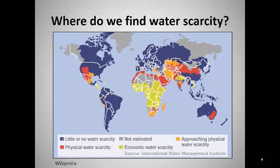Where do we find areas of significant water scarcity? They tend to be found where precipitation is low and population is high, and where there are economic and social barriers to effective water management. Water scarcity already affects every continent except Antarctica. According to the UNDP, around 1.2 billion people, or almost one-fifth of the world's population, live in areas of physical water scarcity, and 500 million people are approaching this situation. Another 1.6 billion people, or almost one-quarter of the world's population, face economic water shortage, where countries lack the necessary infrastructure to take water from rivers and aquifers.